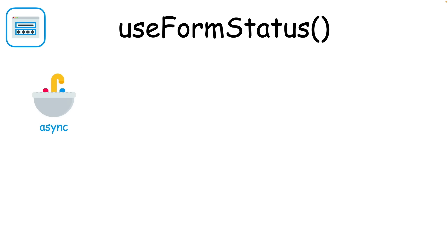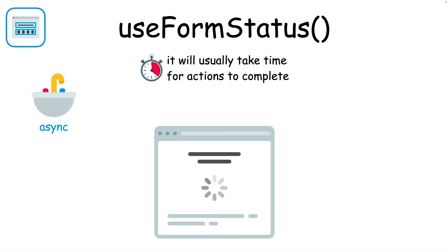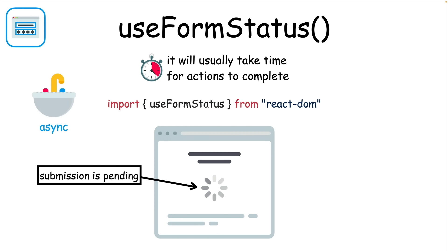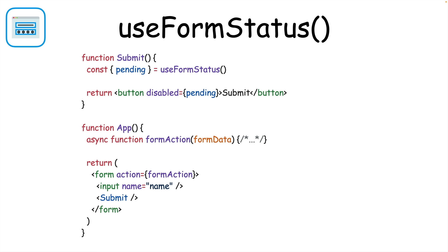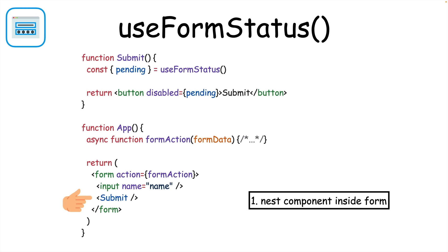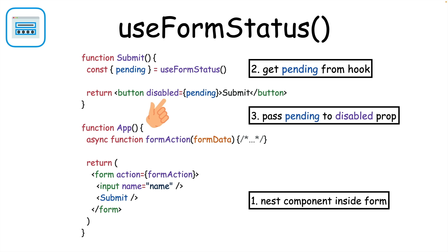However, if your action is asynchronous, you won't know exactly when your form submission will finish. To prevent the form from being submitted again before it finishes, you can use the useFormStatus hook from React DOM. It'll give you information about when the submission is pending, and this is helpful for doing things like disabling the submit button during a form submission. You'll first create a nested component inside your form, then inside that component call useFormStatus to get the pending property, and finally pass the pending property to the disabled prop.